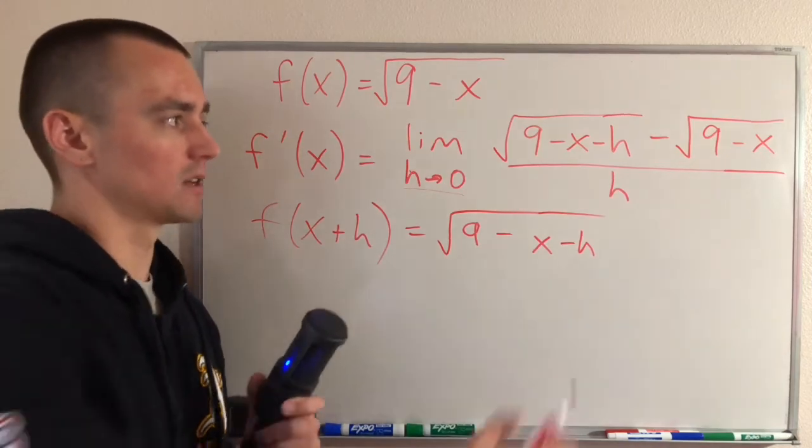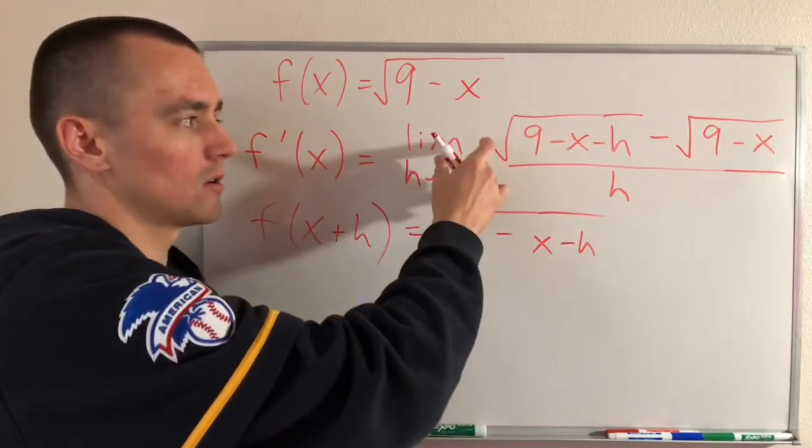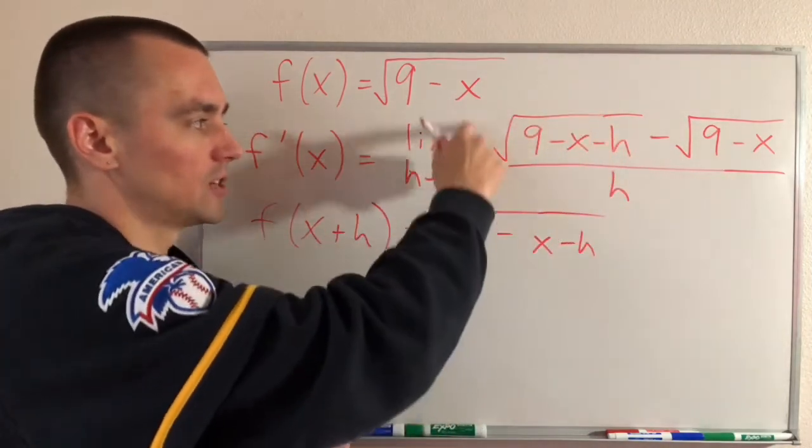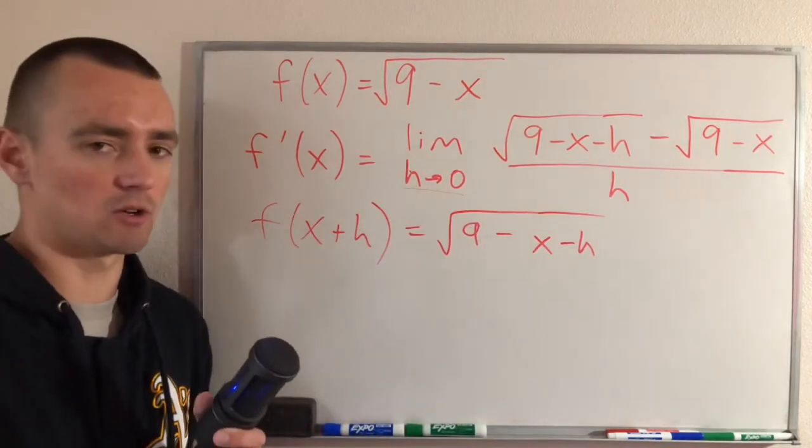Usually the pattern is going to be that we're going to try to get some h on the numerator that we can pull out and have h times a bunch of other stuff. And then the h on the numerator and the h on the denominator will cancel, and then we can just plug in 0 for h.